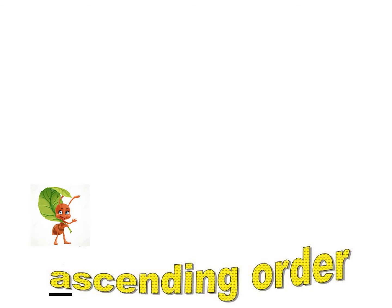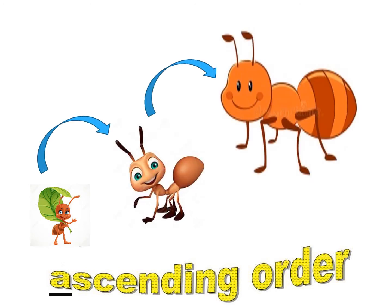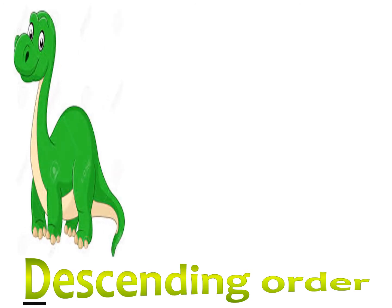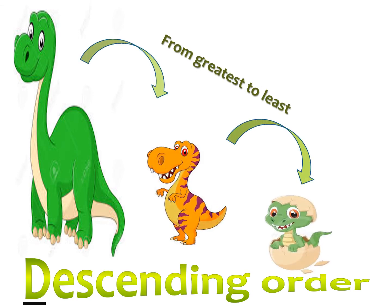Ascending order starts from small to big, like the letter A which is very very small. Descending order starts from big to small, like the letter D for dinosaur which is very very big — from greatest to least.